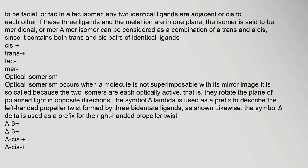A mer isomer can be considered as a combination of a trans and a cis, since it contains both trans and cis pairs of identical ligands. Optical isomerism occurs when a molecule is not superimposable with its mirror image. It is so called because the two isomers are each optically active — they rotate the plane of polarized light in opposite directions. The symbol λ is used as a prefix to describe the left-handed propeller twist formed by three bidentate ligands, while the symbol Δ is used for the right-handed propeller twist.